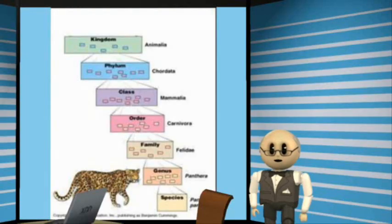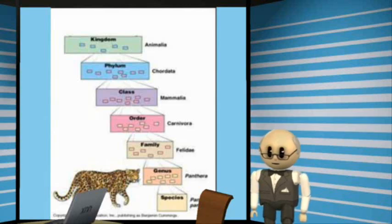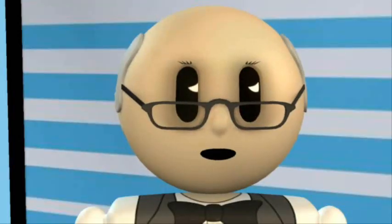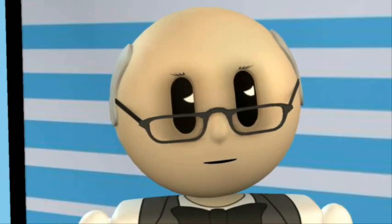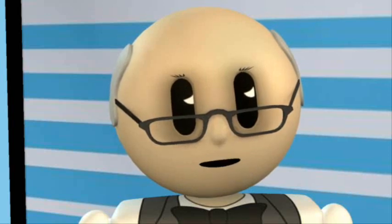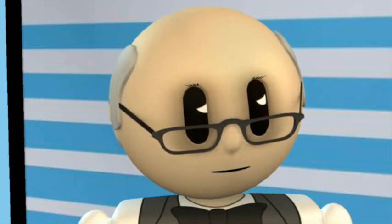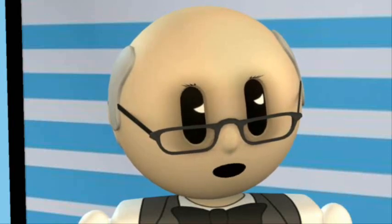Under the Linnaean system, which works its way down from kingdom, phylum, class, order, family, genus, and species, species is defined as organisms that are members of the same genus but that do not interbreed in nature. Under the Linnaean system, a species can sometimes be subdivided. Such a subdivision is called a subspecies, breed, variety, or race.